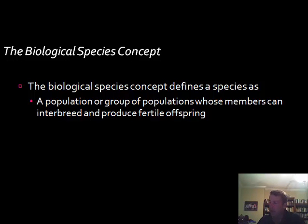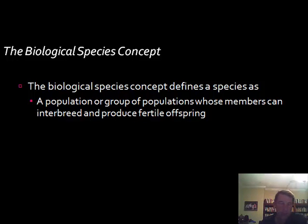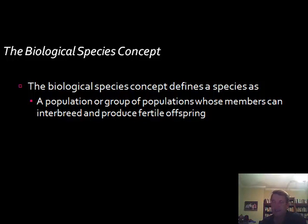For example, coyotes, domestic dogs, and wolves are separate species but are able to produce fertile offspring with each other. Another issue is that the breeding criterion doesn't help us with bacteria, which are asexual and reproduce by dividing. So breeding can't be a criteria for naming species in bacteria.